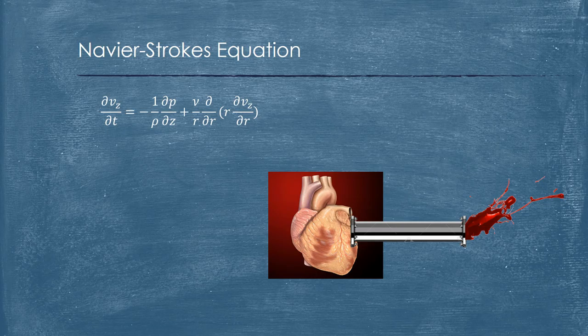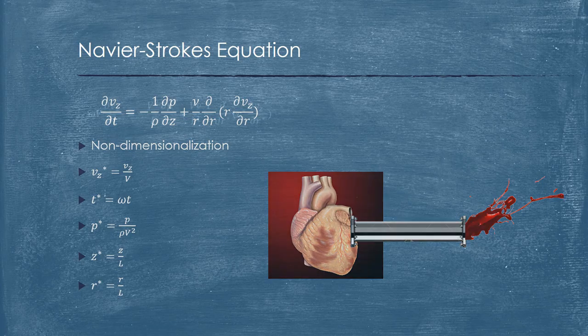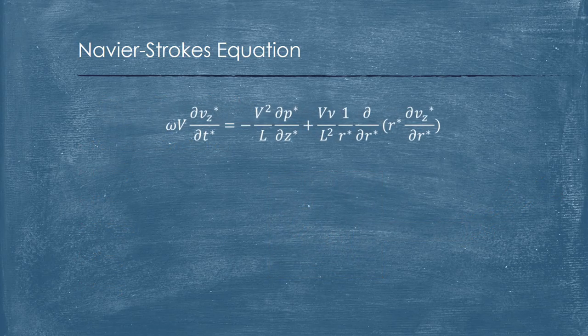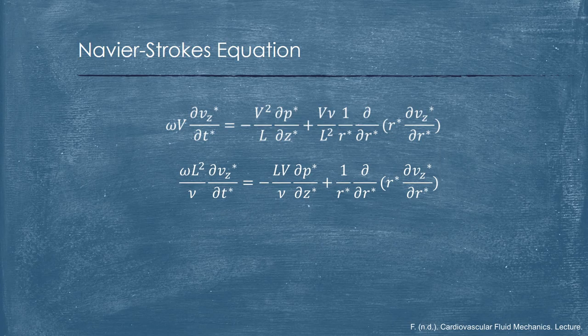With the Navier-Stokes equation, we can do a non-dimensionalization of the equation with some replacement of the variables. And we can now get the following equation. With some rearrangement of the variables, the equation becomes something like that.